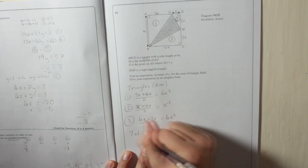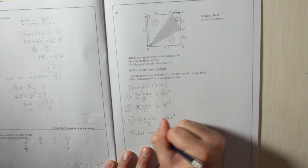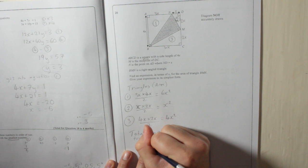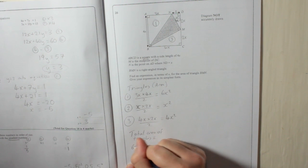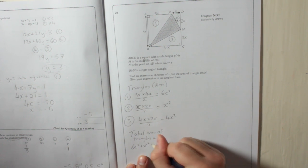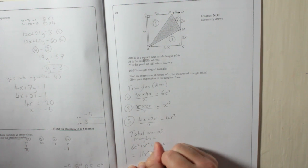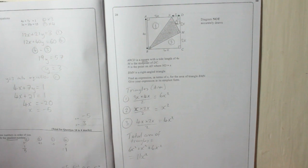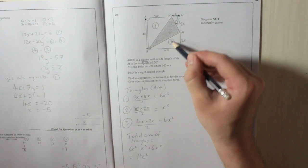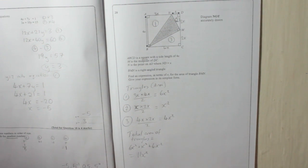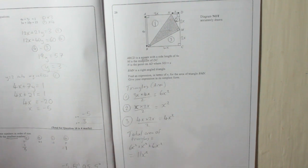And in total, so the total area of triangles equals 6X squared plus X squared plus 4X squared, which is 11X squared. So, that's how much these white bits, that's the area of these white bits. We don't know the actual areas in numbers, but we do know them in terms of X.